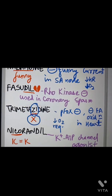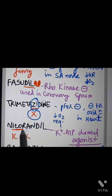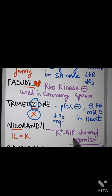Next we have nicorandil. 'N' and 'C' in 'nico' lie very close and hence we can remember it as resembling 'K' — so it is a potassium ATP channel agonist. What's important is to remember it's an agonist and not an antagonist.